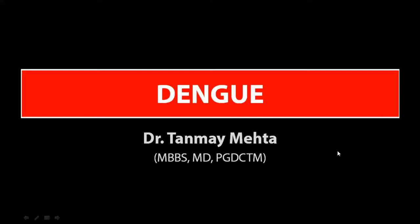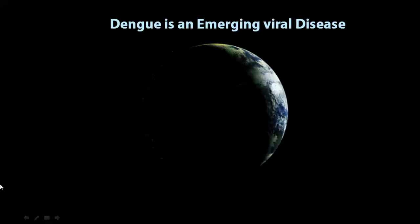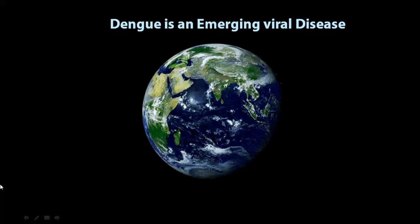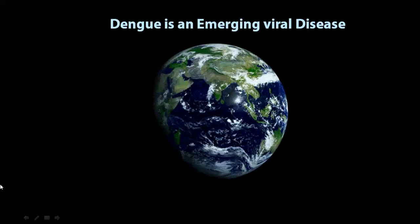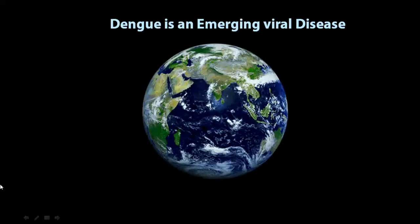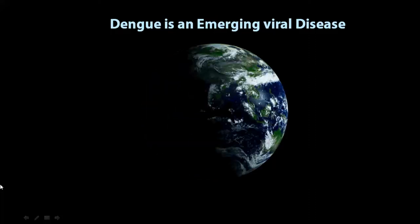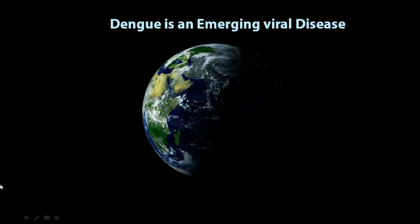Hello friends, today we are going to discuss about Dengue. The four Dengue viruses originated in monkeys and independently jumped to humans in Africa and Southeast Asia between 100 and 800 years ago. Dengue remained a relatively minor, geographically restricted disease until the middle of the 20th century.